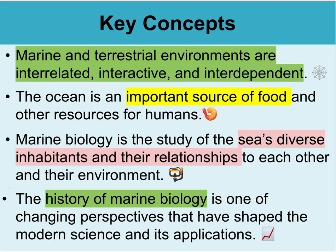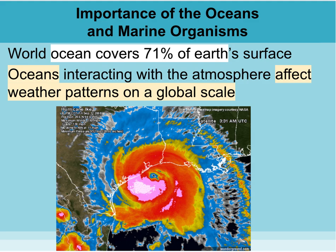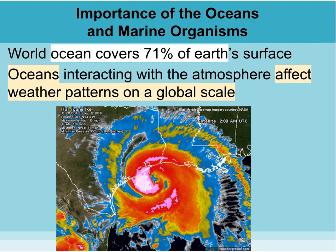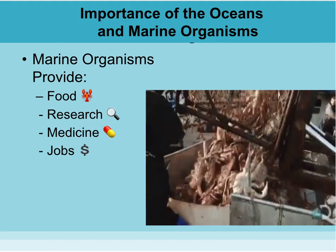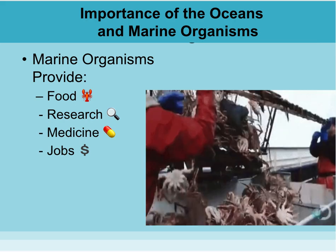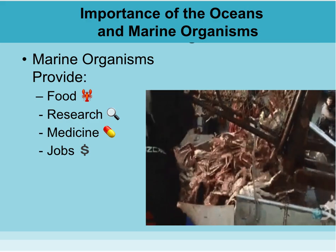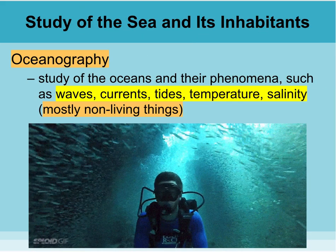In each of my videos, I start out going over the key concepts, but I don't spend a lot of time talking about them. I will just scroll over them and you can come back and pause as necessary. Our oceans and marine organisms are so critical and vital to us living here on Earth. Oceans cover 71% of the Earth's surface and massively affect our global weather patterns and atmospheric conditions. Marine organisms provide food and jobs for people who fish them, and lesser known, they also provide a lot of new medicines that are coming out of the oceans.